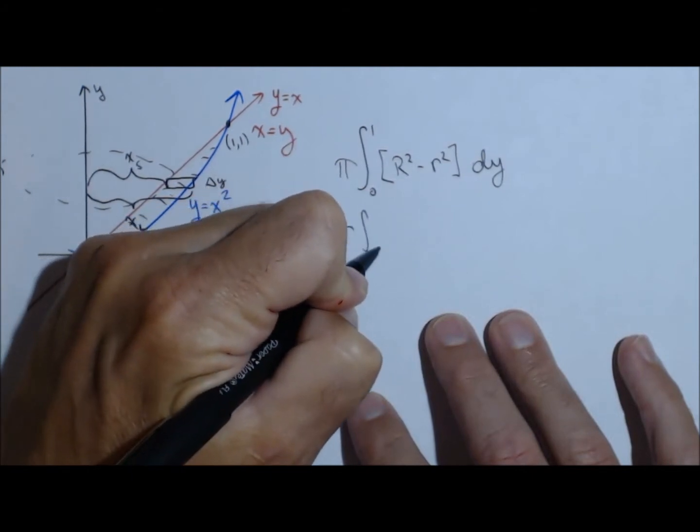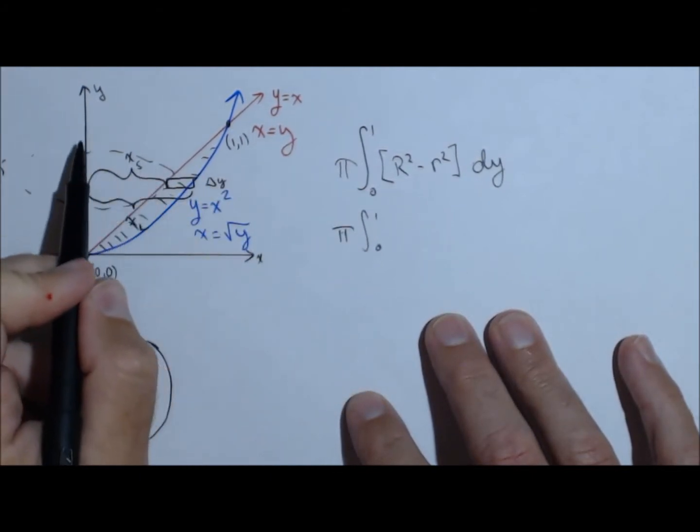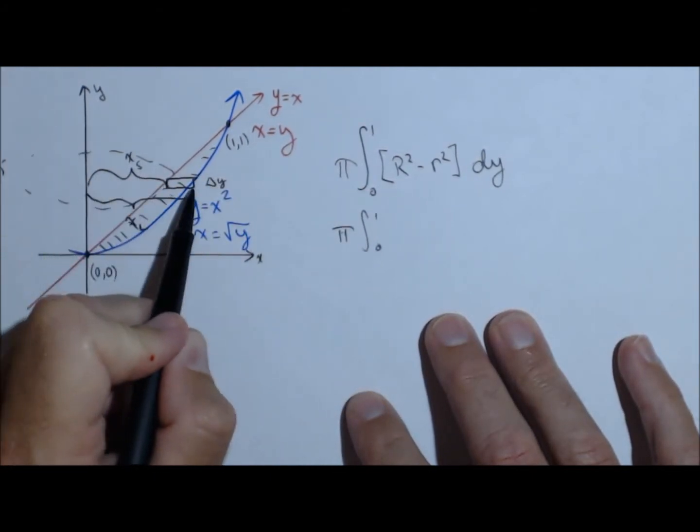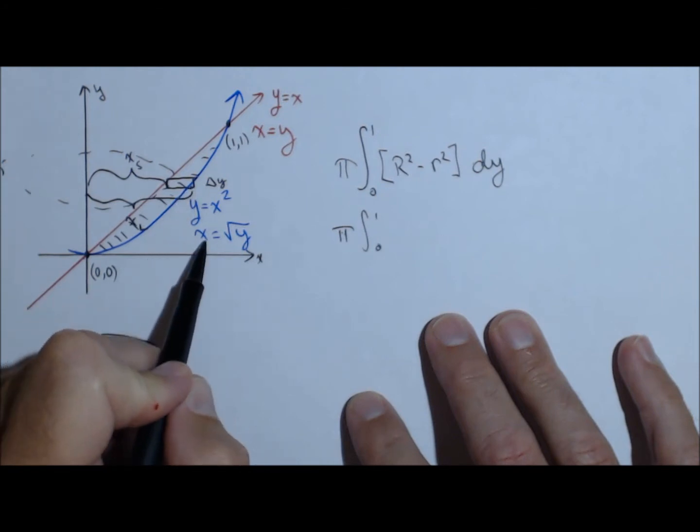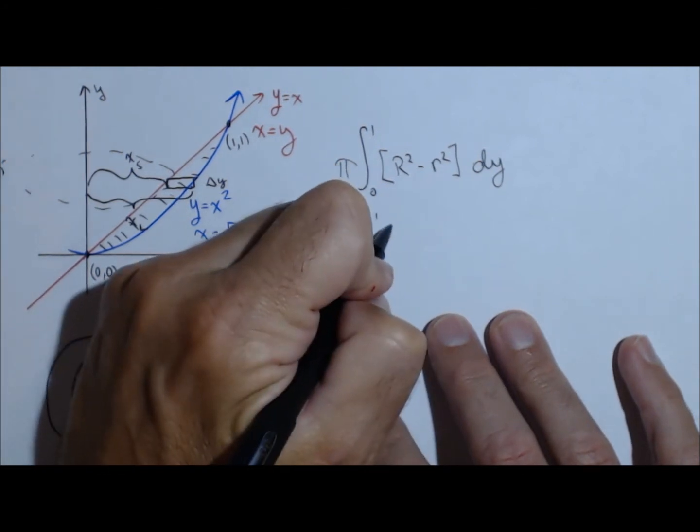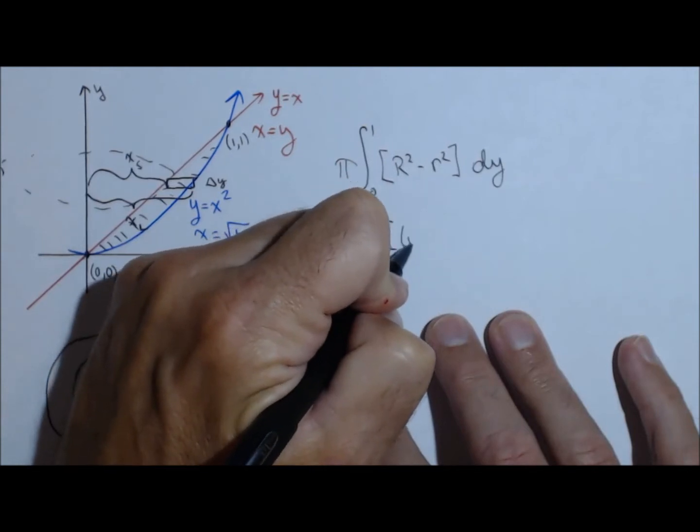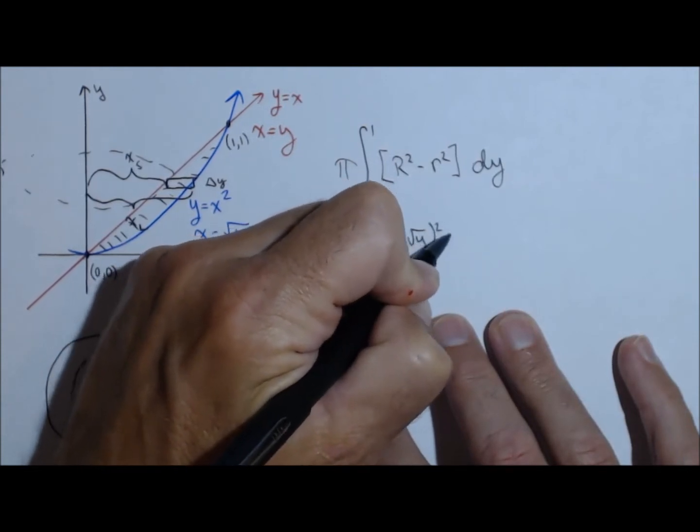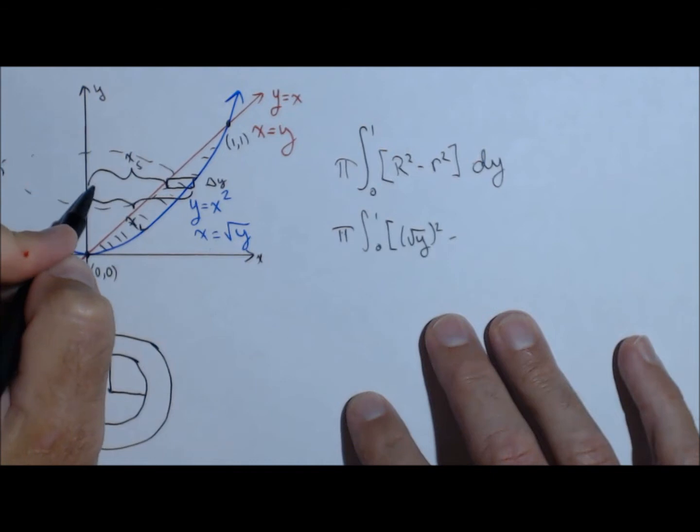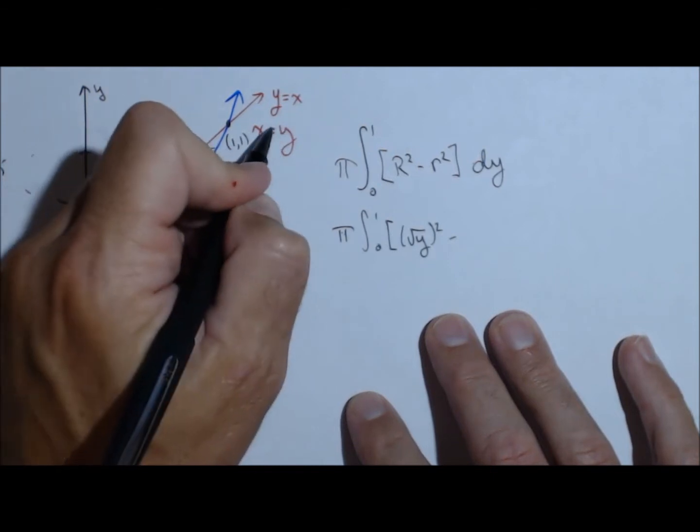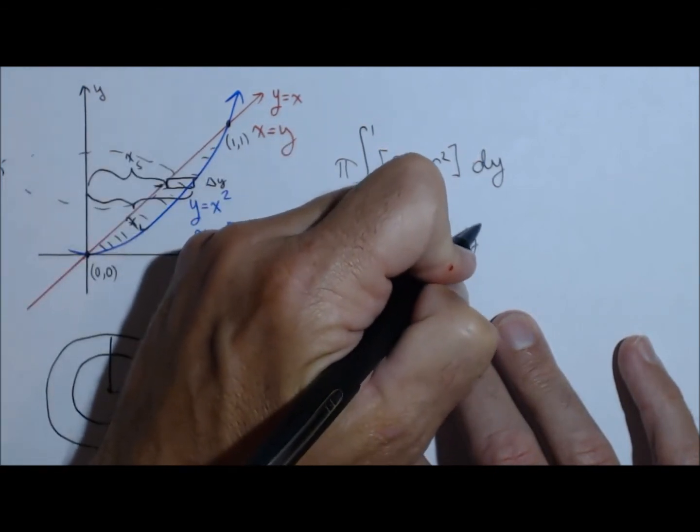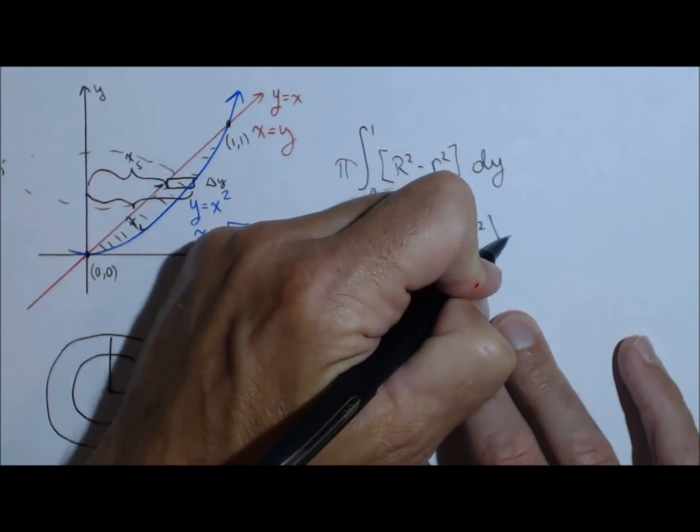So we need to plug in our big radius. Big radius is from here out to here, so it's x equals square root of y. So the big radius is square root of y squared. And the little radius to right here is the line x equals y. So just y squared dy.